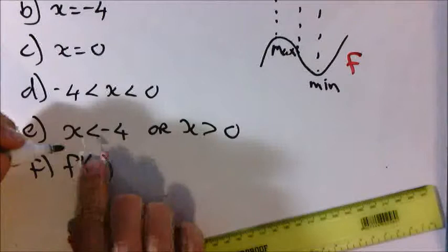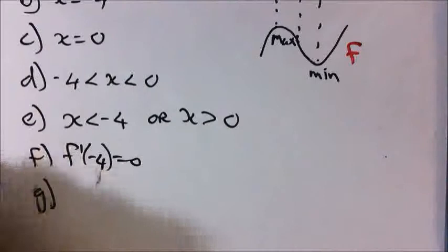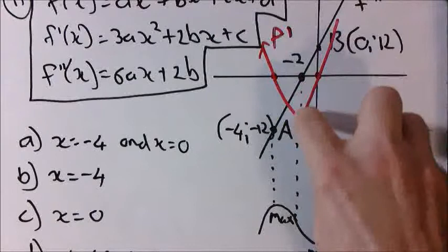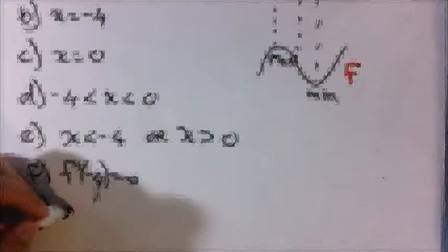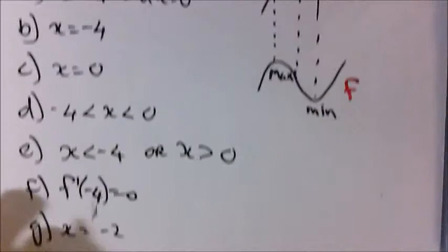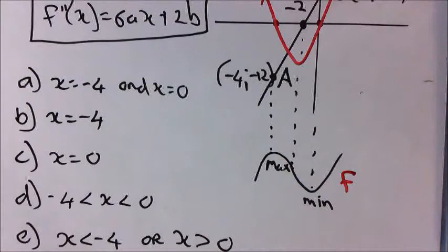Part G: the x-coordinate of the point of inflection of the graph of f(x). We've already discussed this — the second derivative is 0 at the point of inflection, and all three graphs line up there. So the answer is x = -2. Part H: x for which the graph of f(x) is concave downwards. From the point of inflection to the left, it is concave downwards, so x < -2.